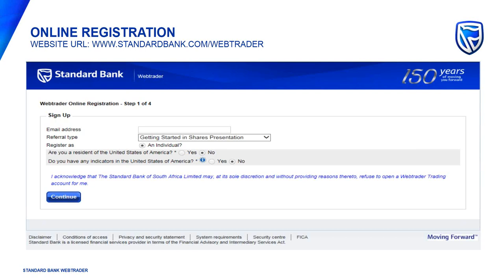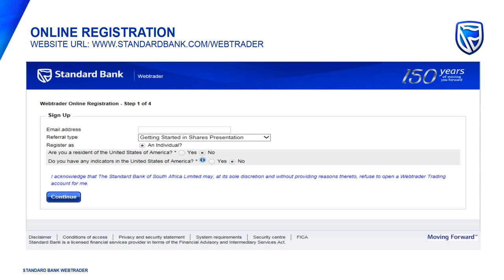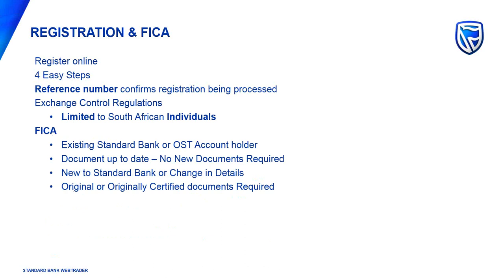Once you've gotten your feet wet and you're ready to invest with real funds, you can register online — a very similar process to online share trading. If you're an existing Standard Bank account holder or online share trading client, the registration and FICA in the back end is relatively simple. FICA requires a copy of your ID, proof of address such as a utility or telephone bill, and a bank statement less than three months old if you don't bank with Standard Bank.